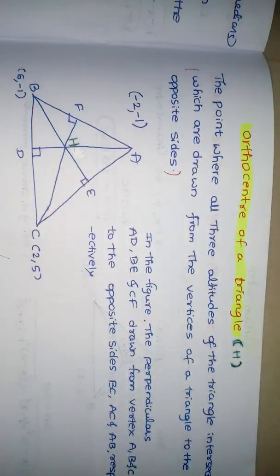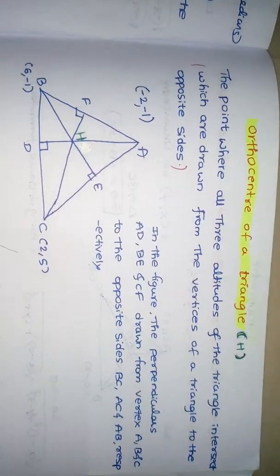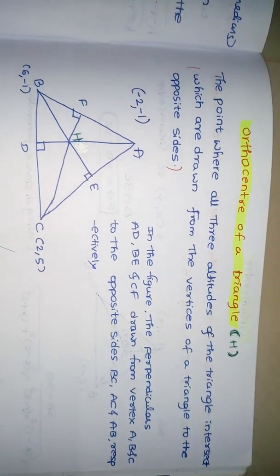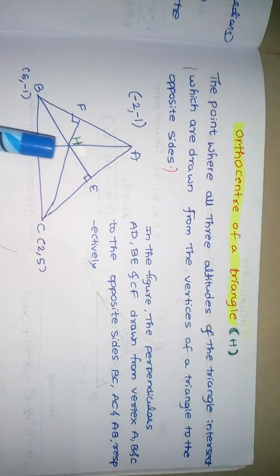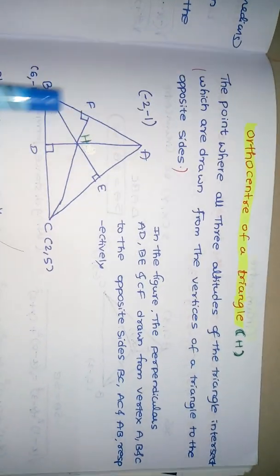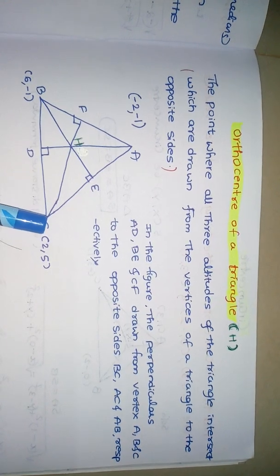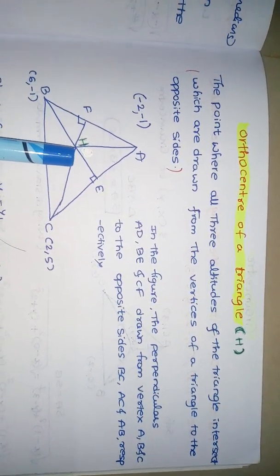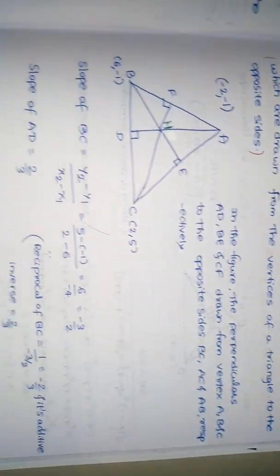Next, the orthocenter of a triangle, denoted by H. It is simply the point where all the altitudes of a triangle intersect. Here, this is one altitude, this is another altitude, and this is another altitude. These three altitudes meet at a point called the orthocenter.